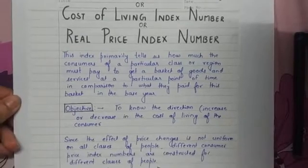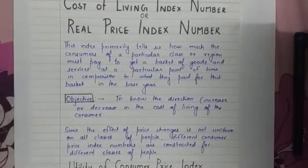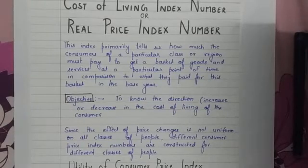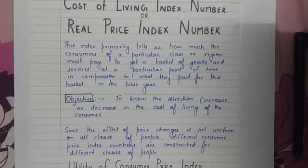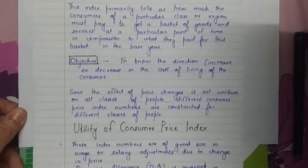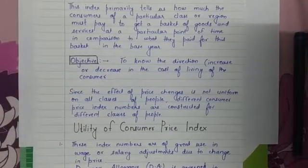This index primarily tells you how much the consumer of a particular class or region must pay to get a basket of goods and services at a particular point of time, in comparison to what they paid for this basket in the base year — that is, how much they paid in the current year compared to the base year.